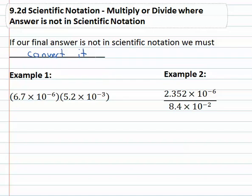So for example, 6.7 times ten to the negative six, multiplied by 5.2 times ten to the negative three.